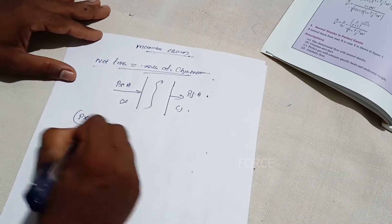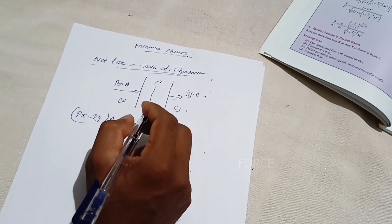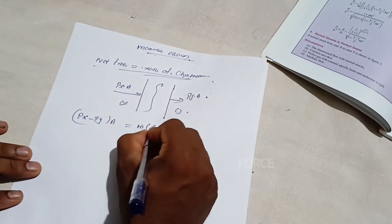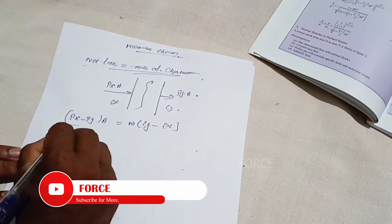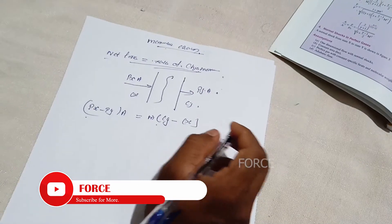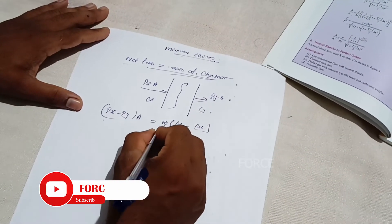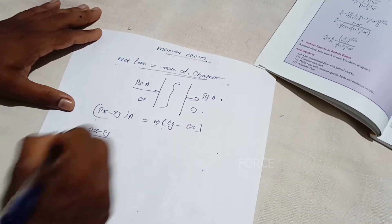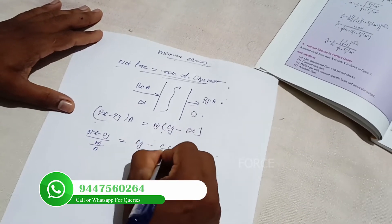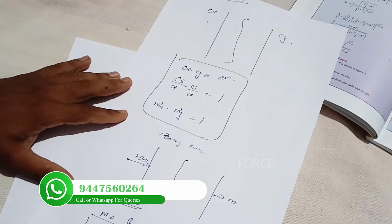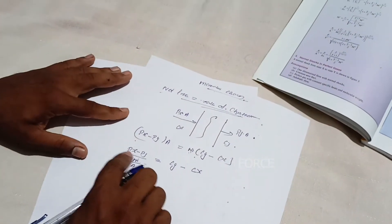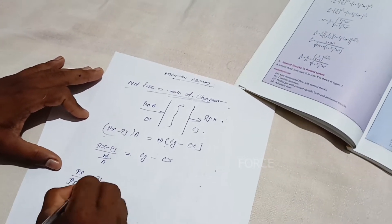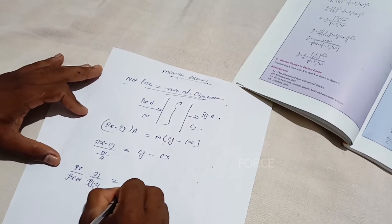Fx·A minus Py into Area — net force is equal to rate of change of momentum, which is mass into change in velocity. Mass flow rate into change in velocity. Change in velocity is equal to net force equal to rate of change of momentum. So: Px minus Py divided by mass flow rate divided by area equals Cy minus Cx. The mass flow rate is ρ·Cx and ρ·Cy. Px equals ρx·Cx and Py equals ρy·Cy. So Px/(ρx·Cx) minus Py/(ρy·Cy) equals Cy minus Cx.